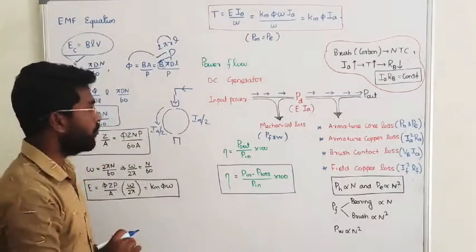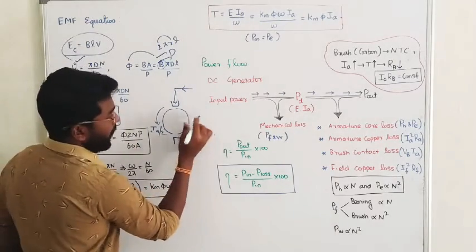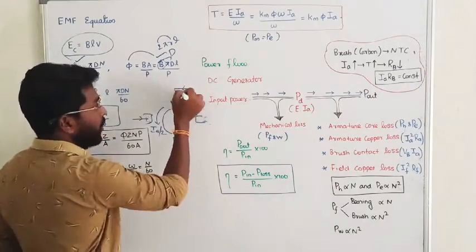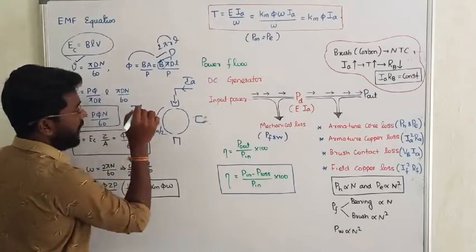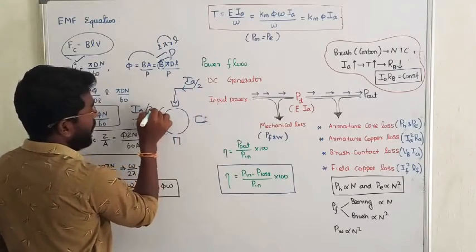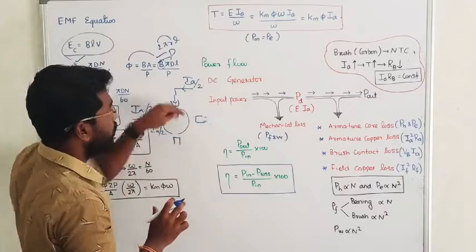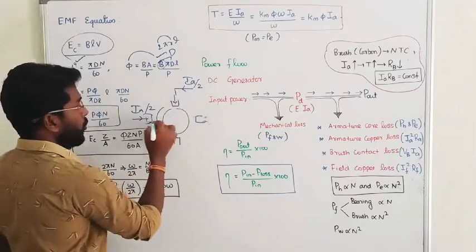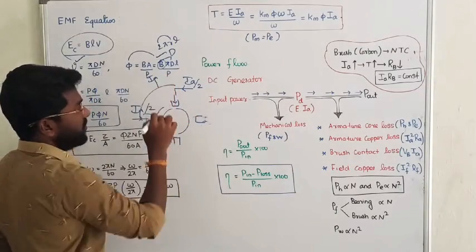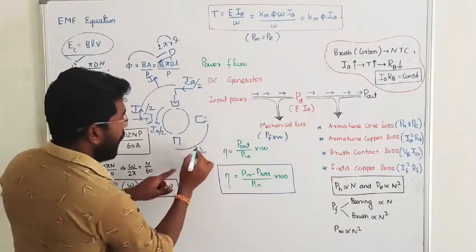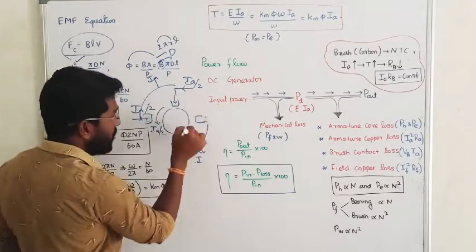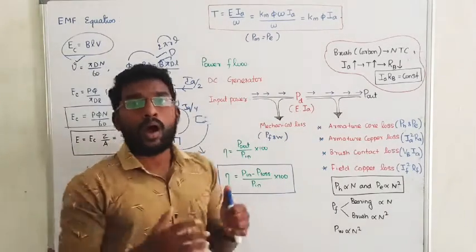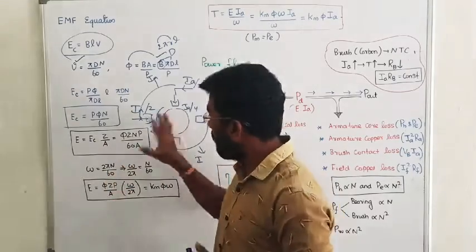For example, if you have two brushes, you will have one armature current Ia splitting as Ia/2 and Ia/2, so the total current is Ia. If you have more than one pair of brushes — say four brushes — then the current further divides as Ia/4 and Ia/4. The conclusion is: if you have any number of parallel paths A, then current divides by A.